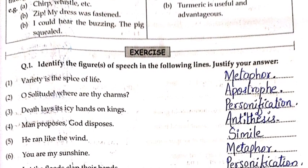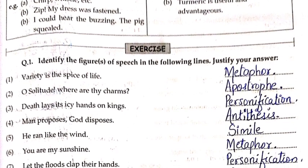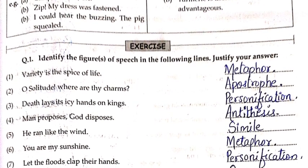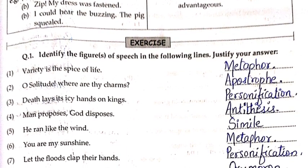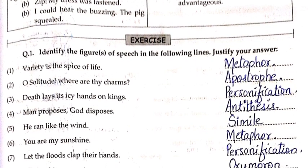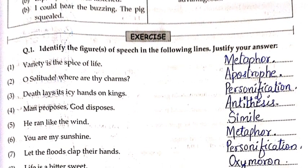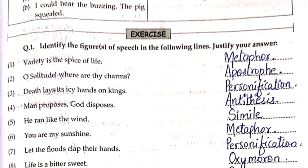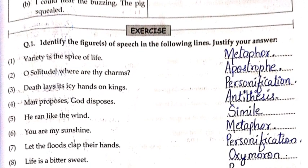Tautology is a figure of speech where two words with the same meaning are placed side by side. Example: 'The girl was happy and merry' — happy and merry have the same meaning and are placed side by side for greater poetic effect. Next: 'Turmeric is useful and advantageous' — advantageous and useful have the same meaning and are also placed side by side.